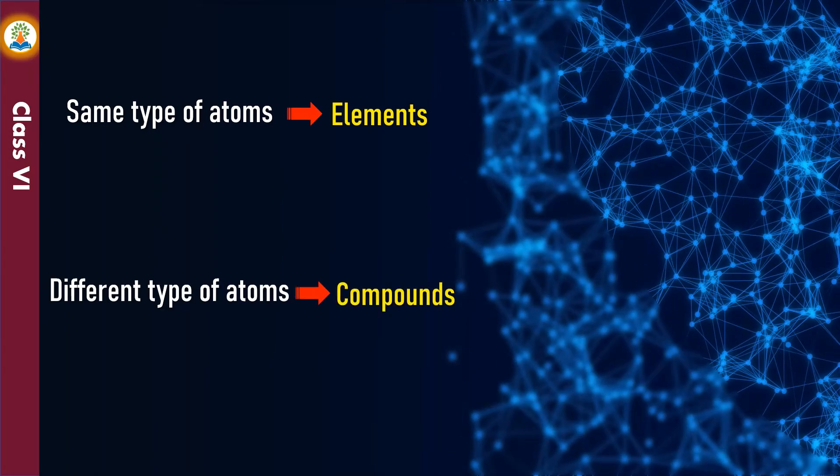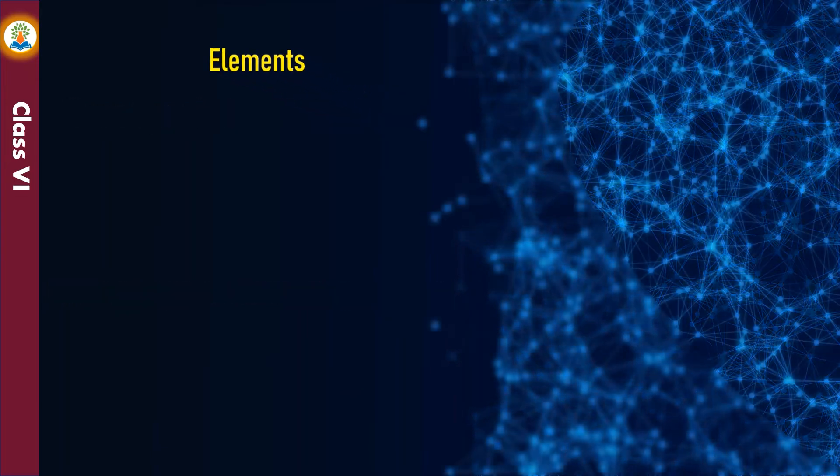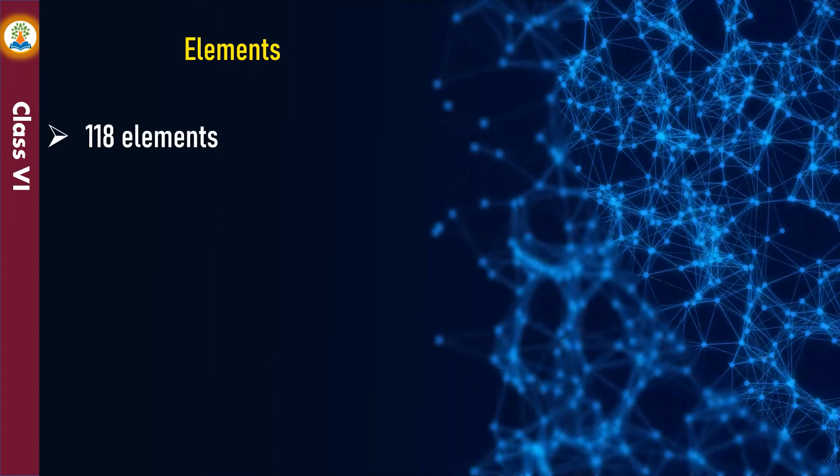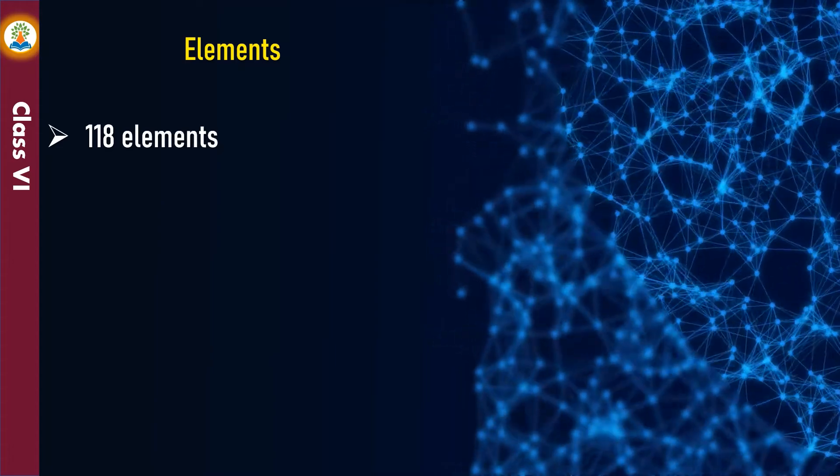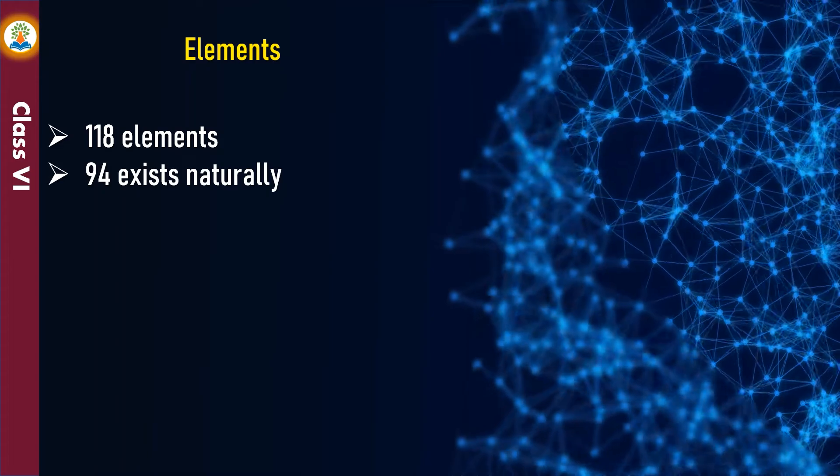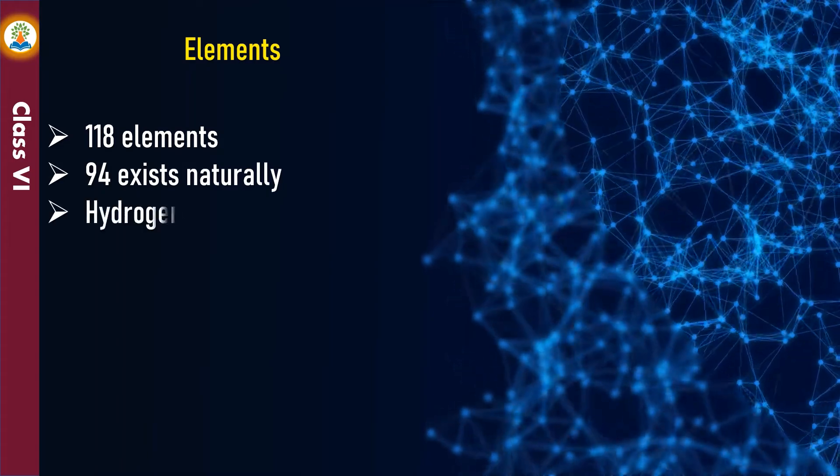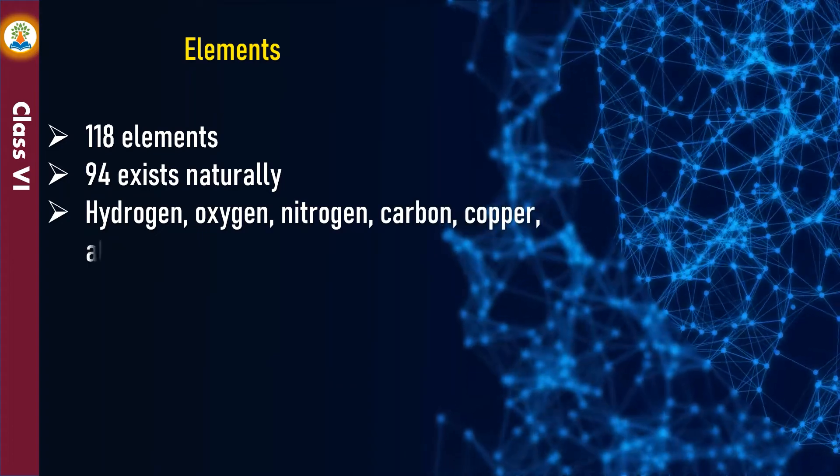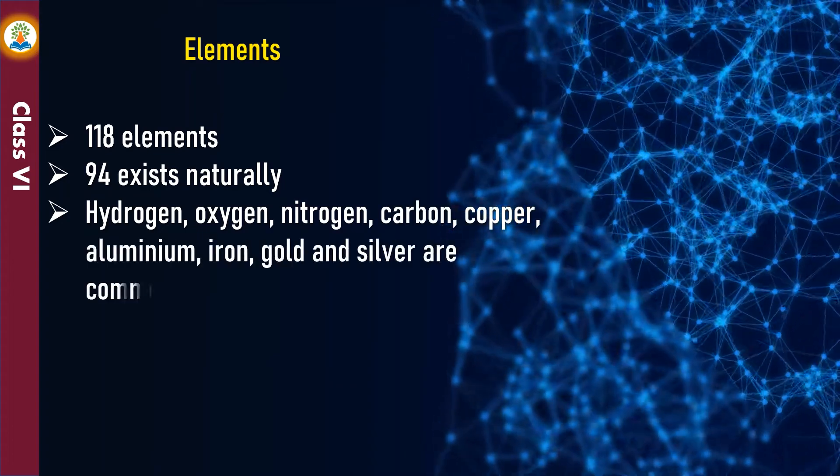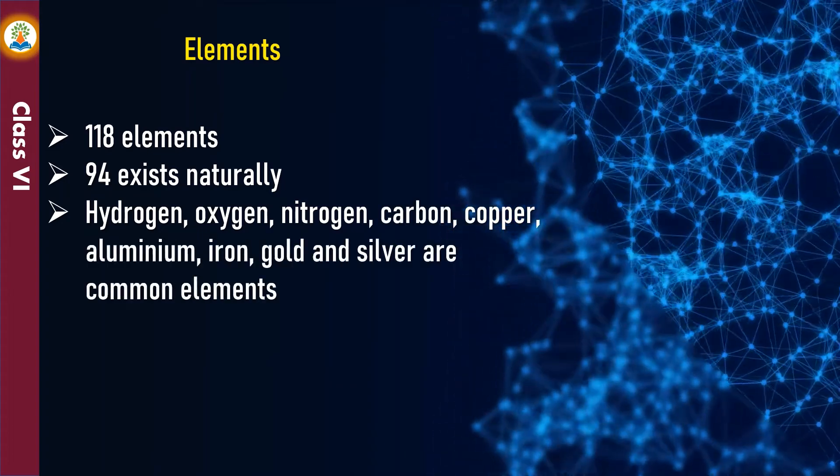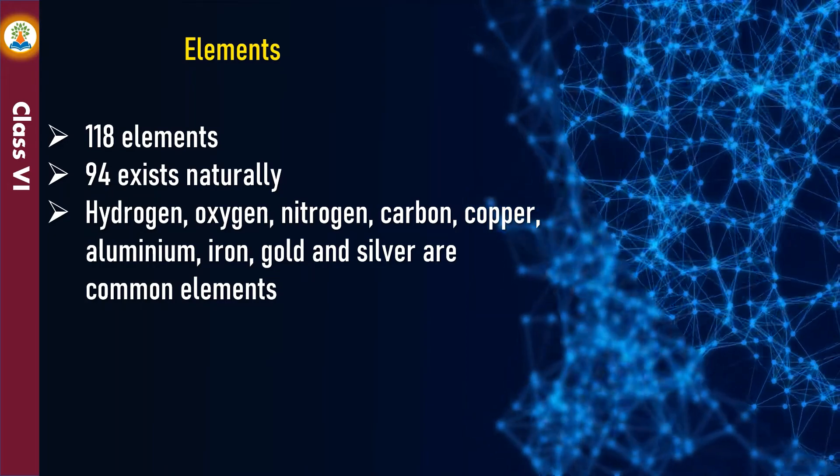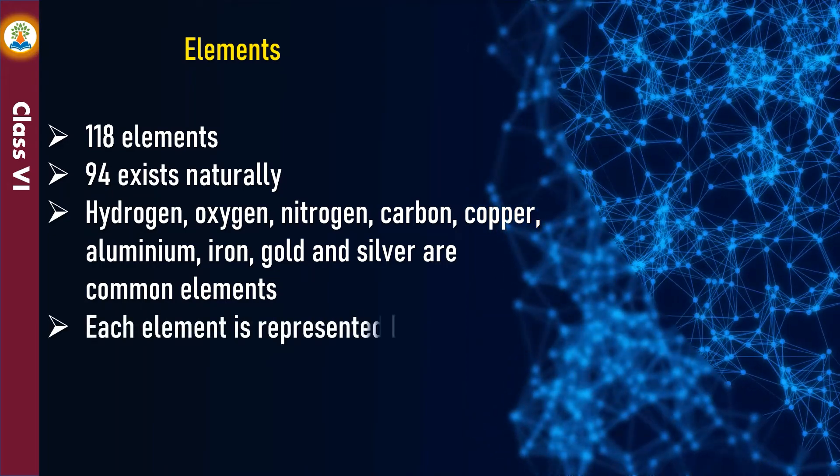Substances formed from atoms of different kinds are called compounds. There are 118 different elements known so far. 94 of these exist naturally, rest of the elements are synthetic. Hydrogen, oxygen, nitrogen, carbon, copper, aluminum, iron, gold, and silver are some common elements. Each element is represented by a unique symbol.